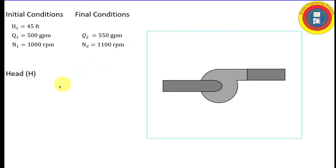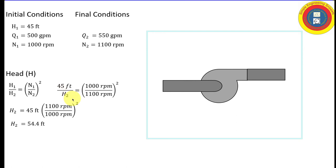Now let's work on head. Again, it's a quadratic relationship. Solving it for the new pump head, we get that the final pump head is 54.4 feet. And that is our final answer.